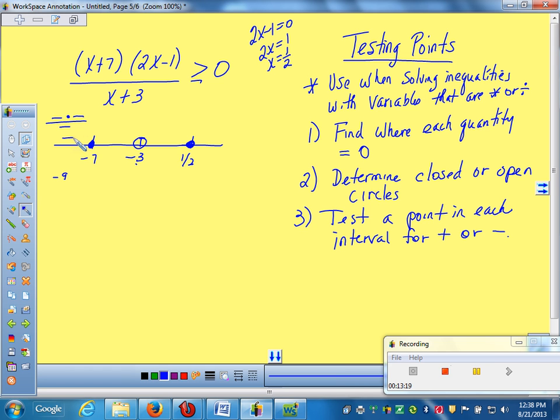We are wanting which kind? Positive. Because ours is greater than zero, we're wanting positive. So we don't want that section. That doesn't work for us. Now I'm going to make your lives easier. Watch it. Let me test one more, then I'll make your lives easier. Pick a number between here. Negative four.